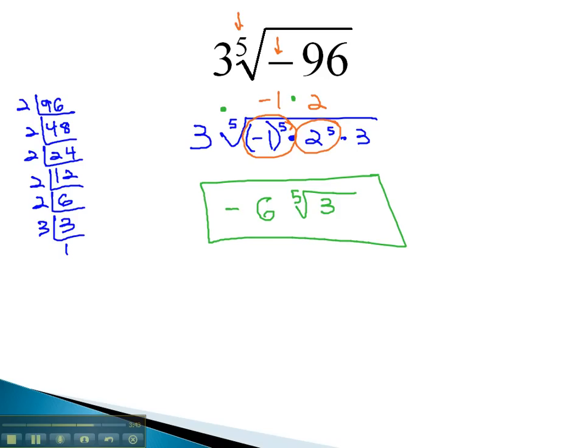We can always simplify our radicals by dividing the exponent by the index, and then multiplying all the outside stuff together to get our final solution.